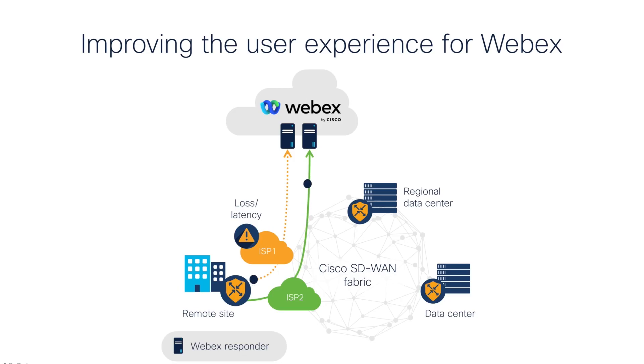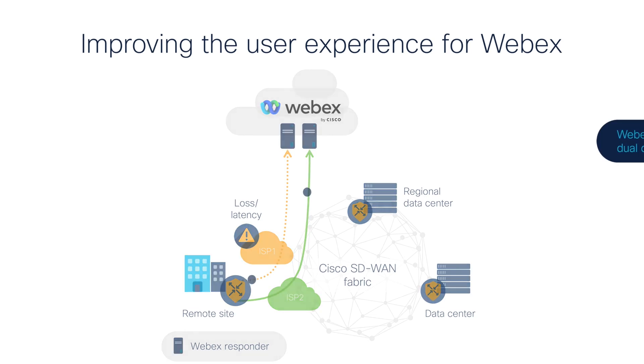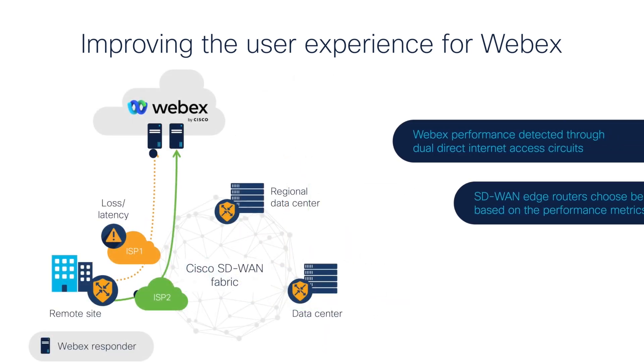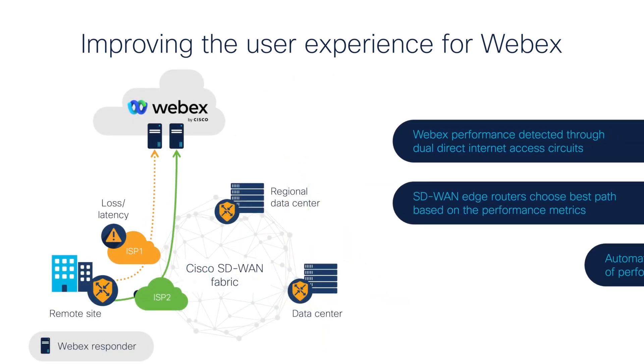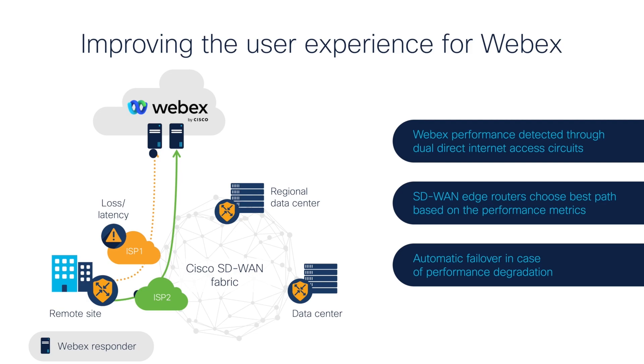Let's look at an example. One of the many applications supported by Cisco cloud on-ramp for SaaS is WebEx. In the current new normal of working remotely from home or anywhere else in the world, Cisco on-ramp for SaaS has taken communication, collaboration, and video capabilities to the next level. Cisco SD-WAN segregates WebEx traffic from generic internet traffic and routes it via the best path from a specific branch router to deliver a seamless, consistent, and high-quality user experience.